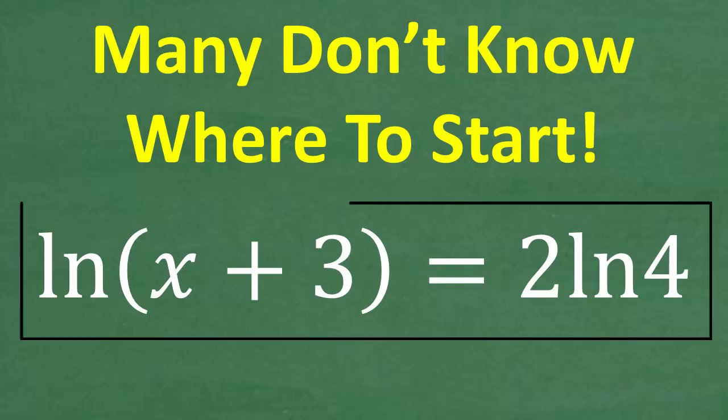This is an equation we're trying to solve for x, and what we have here is a logarithm, specifically a natural logarithm, or ln. We have ln(x+3) is equal to 2 times ln4. Those of you that have studied logarithms should be able to solve this equation very quickly without the aid of a calculator. If you can figure this out, go ahead and put your answer into the comments section.